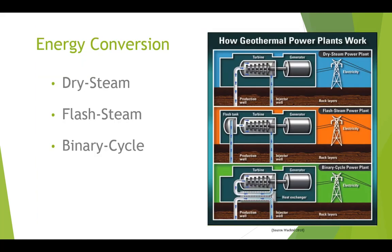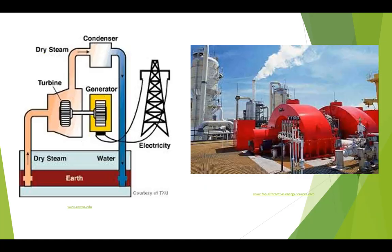Geothermal resources can be used to generate electricity by expanding vapour through a turbine, which is connected to a generator that produces electricity for distribution. Three main configurations can be adapted depending on the type of geothermal resource being used. In vapour-dominated resources, also known as dry steam or direct steam, pressurised steam is piped directly from wells to a power generation plant where it is expanded through a steam turbine.